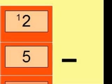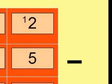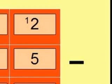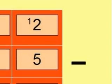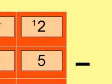Let's look at the first method. First of all, we look at the units, and we see that we have 2 take away 5. Of course, we see straight away that we're unable to take 5 from 2.